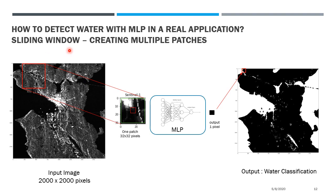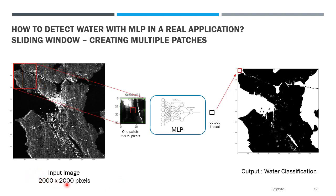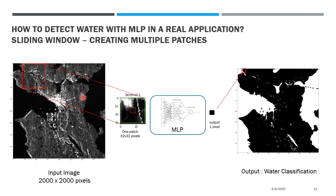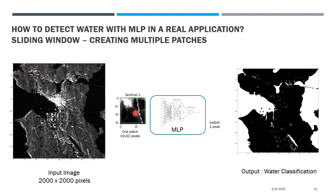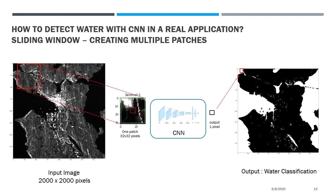After training the neural networks, how can we use them in a real application? Here we have an example of an image of 2000 by 2000 pixels. If you want to detect water using a neural network, you can create four million patches using a sliding window approach, and then input each of these patches into the neural network. The output will give you the probability that the center pixel of the patch is water or not. Using the same approach, you can also use a CNN to detect water.